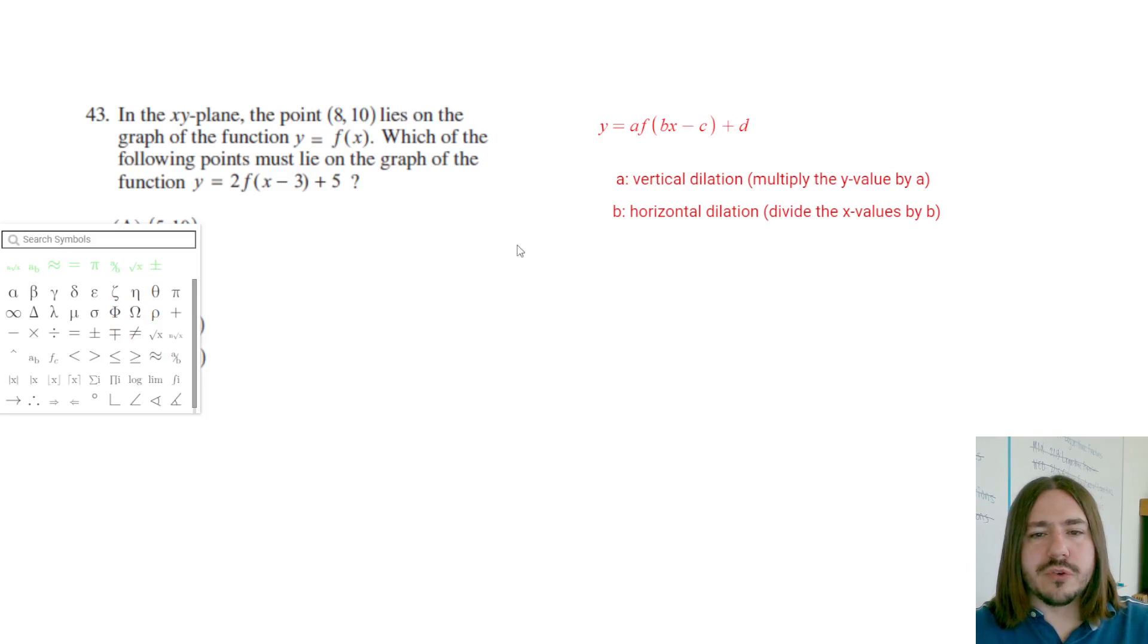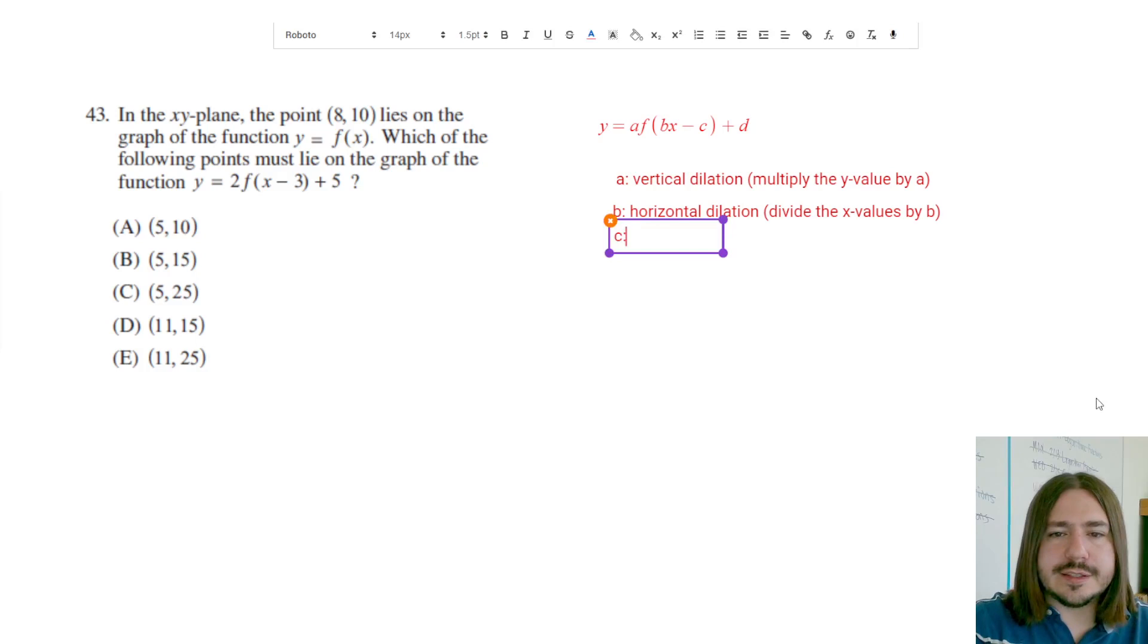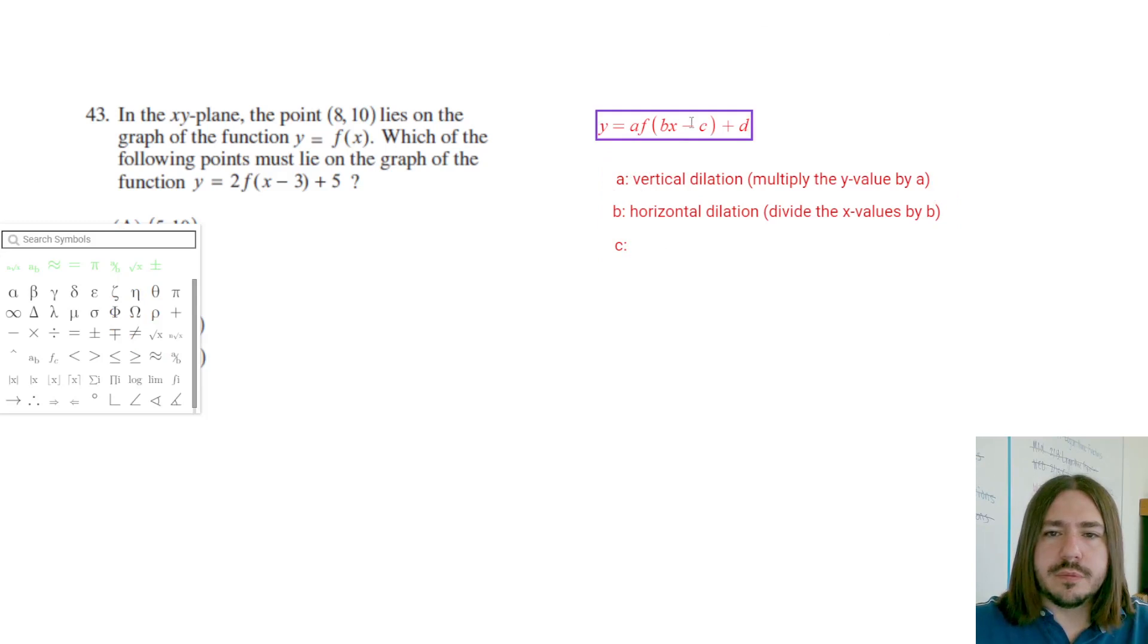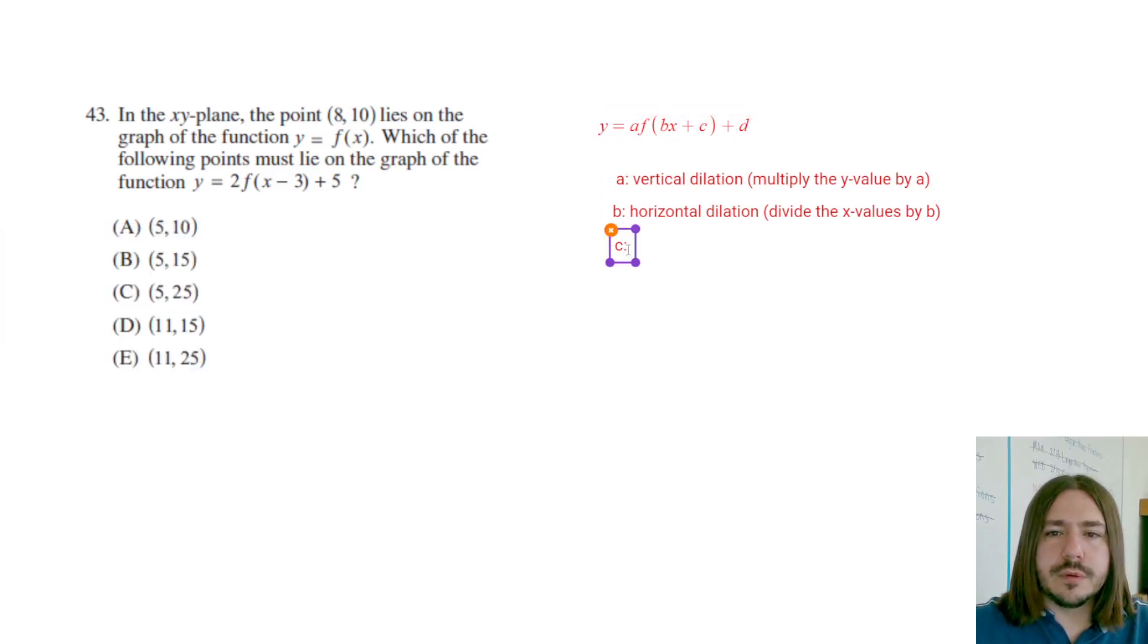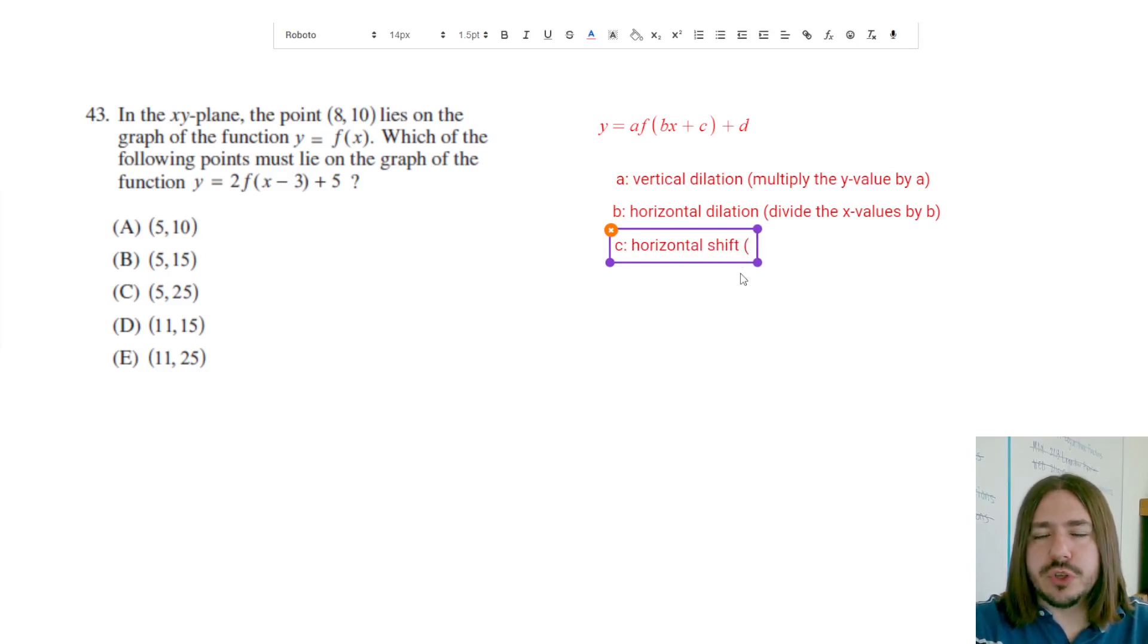Now C and D are going to be our horizontal and vertical shifts, respectively. They're also known as translations. And basically what they do is they just shift the point either to the left, right, up, or down. C is going to cause a horizontal shift. And again, that C is inside the parentheses, so it kind of has the opposite effect of what you might think. Actually, you know what, let's make this a plus. So C is going to cause a horizontal shift or translation. And effectively what you do with the coordinates here is you're going to subtract. You're going to do the opposite of what you see here. So if it's plus, you're going to subtract C from the X value.